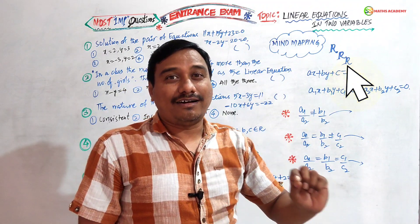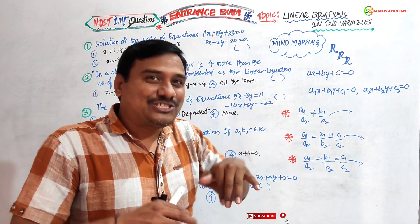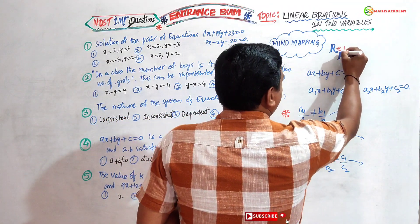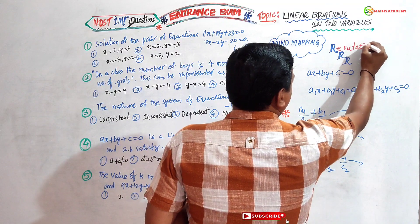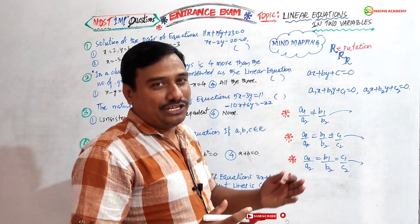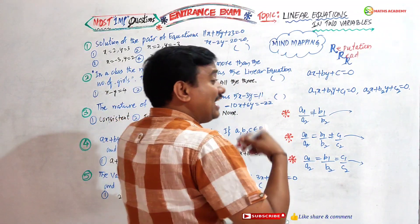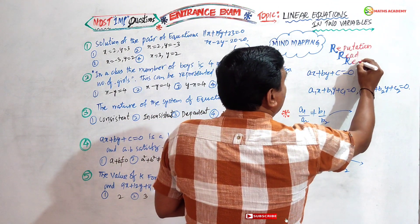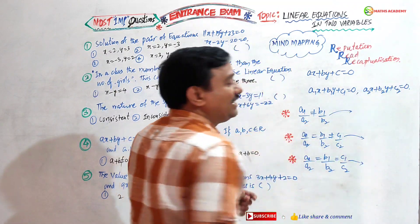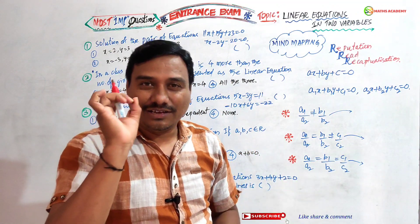R R R — it is not a Rajamouli movie. In our style: R means Reputation — you have to believe in our channel for this subject. Next R means Read — you have to read perfectly. And after reading, the third R means Recapitulation or Repetition — after reading you have to recapitulate, revise it. Then you will definitely get it perfectly.